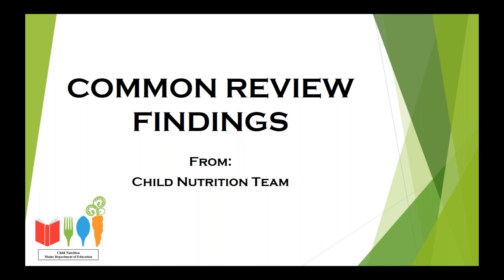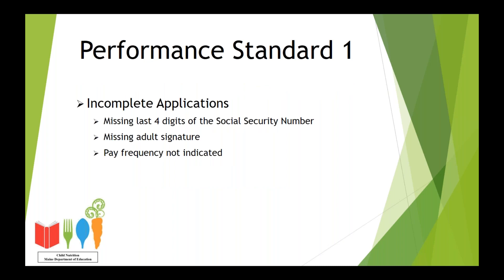Findings that occur during the review process are sorted into three different categories: Performance Standard 1, Performance Standard 2, and General. We have taken our list of common findings and we will be addressing them in this order throughout the webinar. Performance Standard 1 is the first area we are going to look at. This can include anything in regards to certification and benefit issuance, verification, and meal counting and claiming.